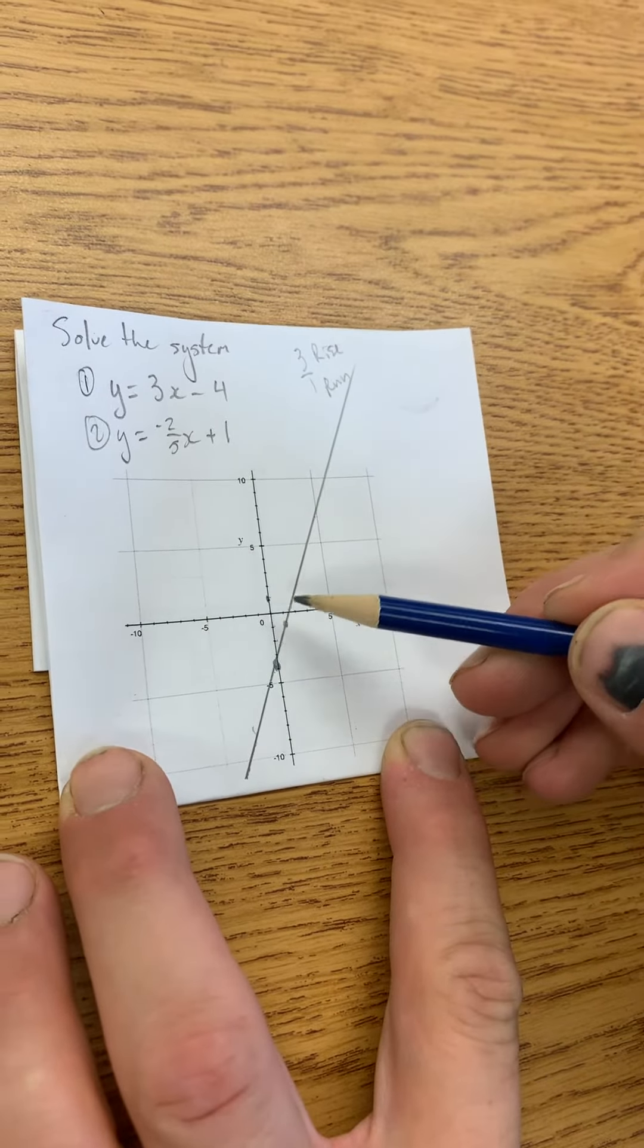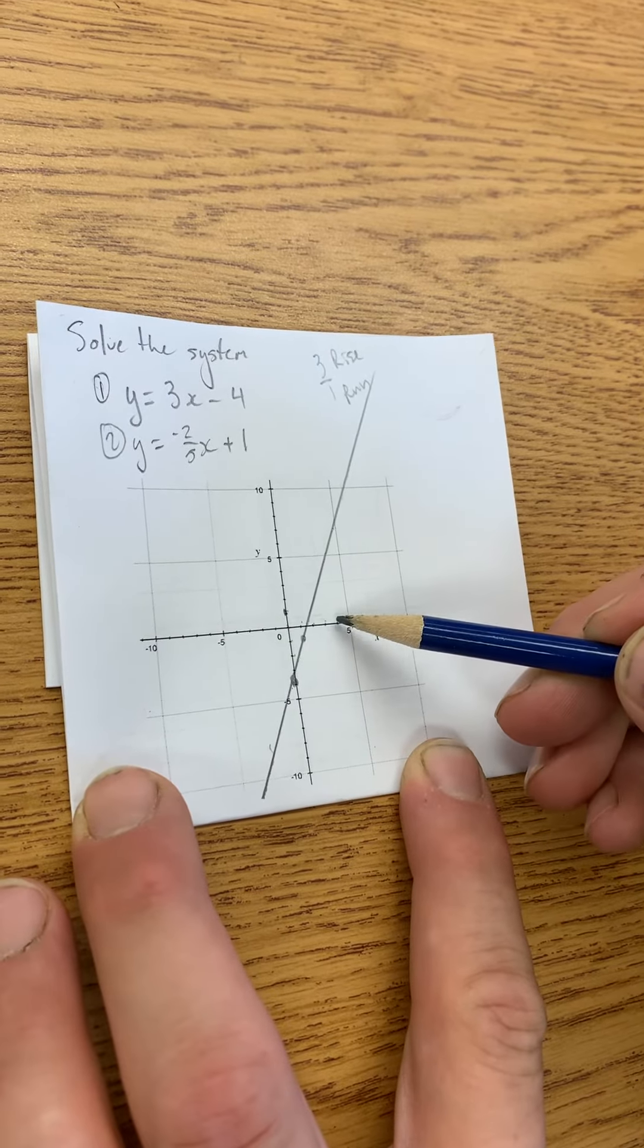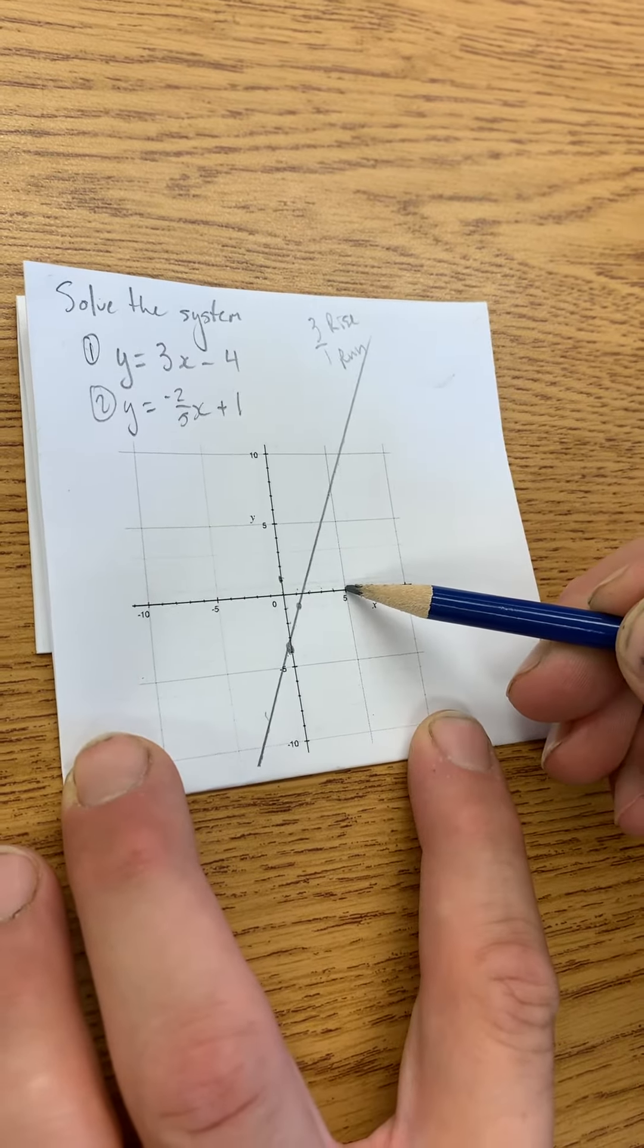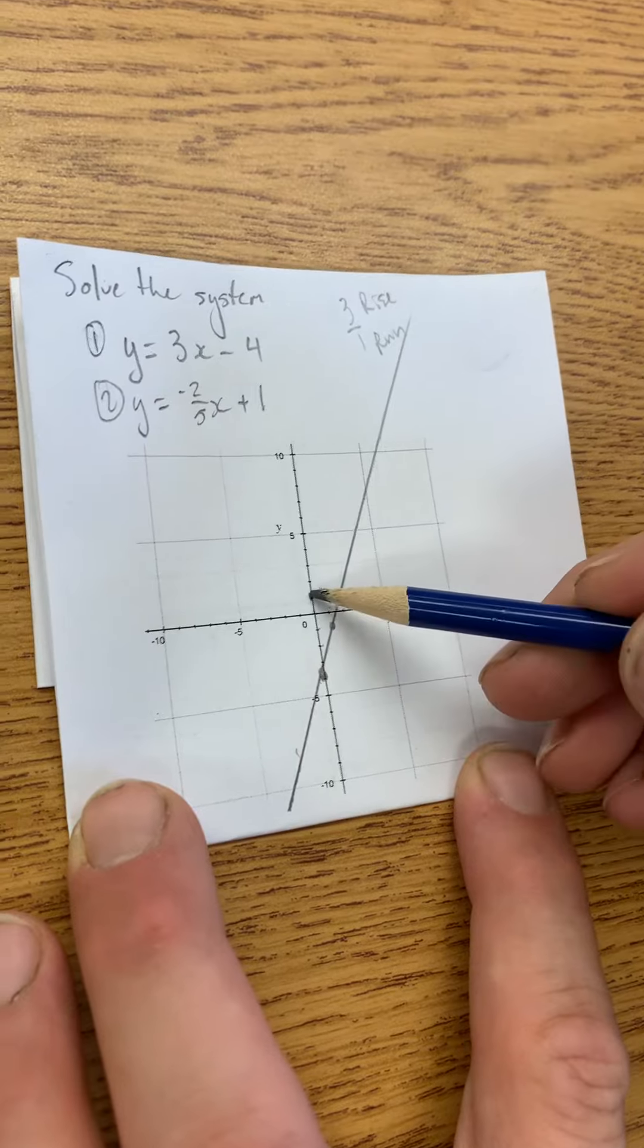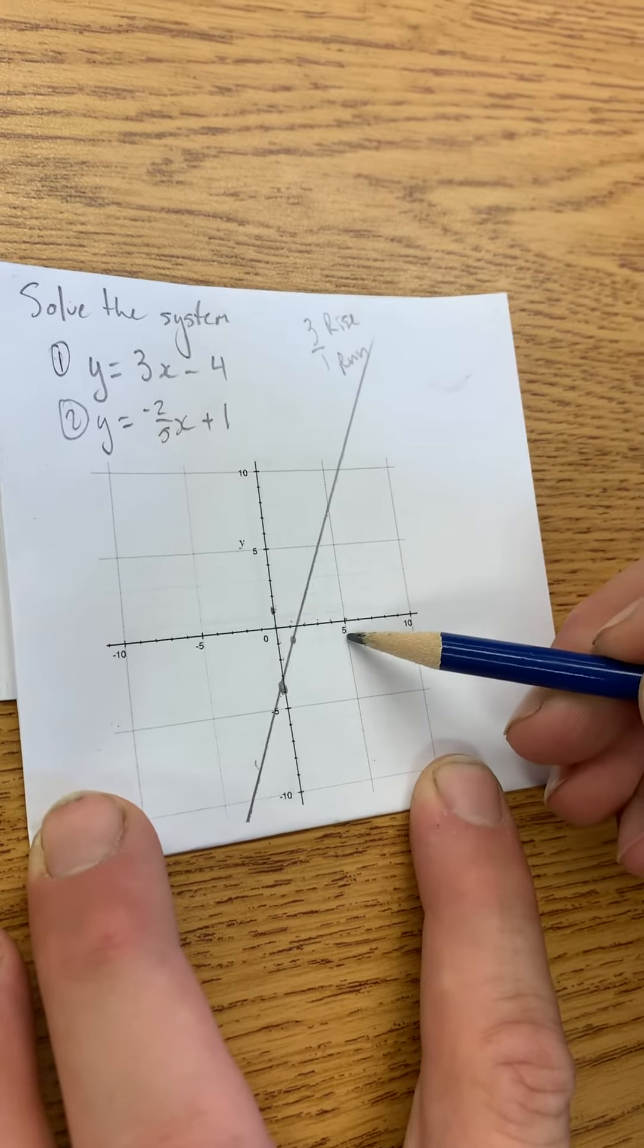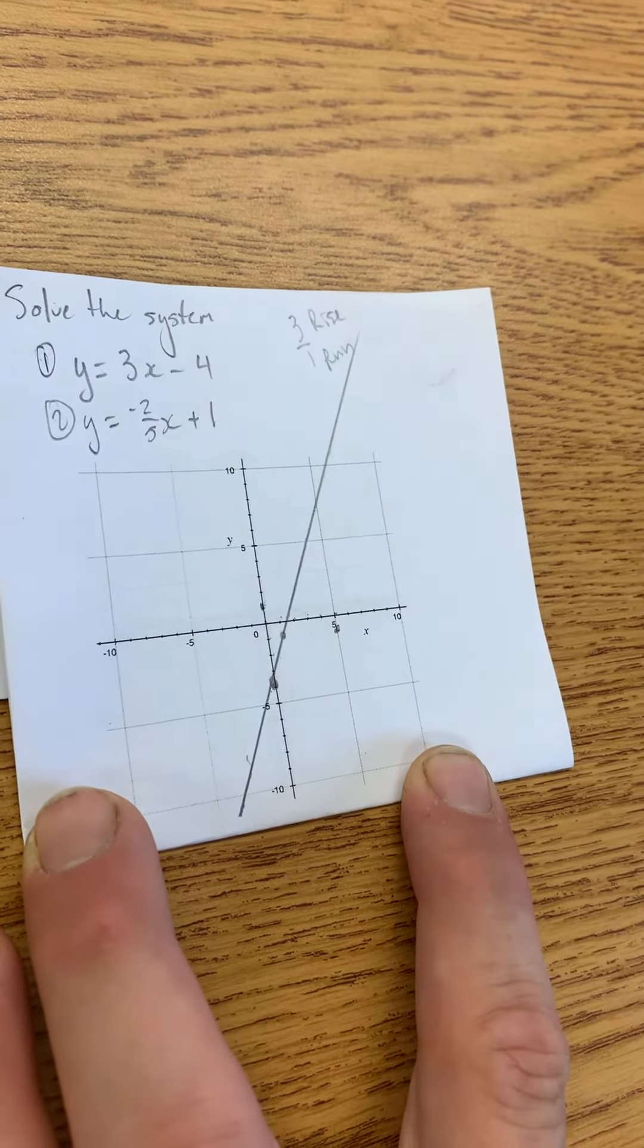And now we're going to go down 2 and over 1, 2, 3, 4, 5. Of course I only went down 1 there, so I better go down another 1. Down 2, over 5. And that's my second point.